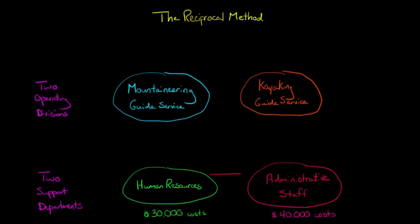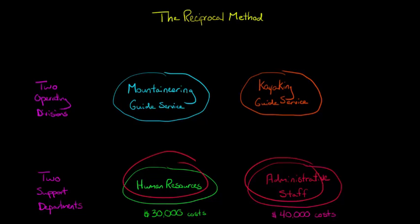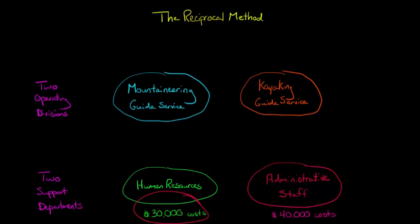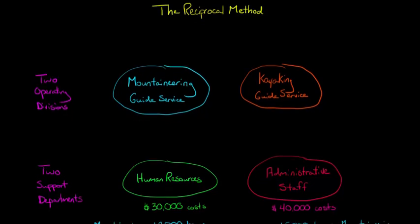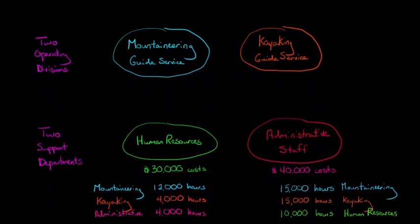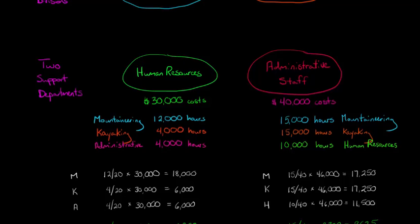We recognize that the HR department provides some support to the admin people, and the admin people provide some support to HR. So we need to allocate some costs between the support departments, not just to the operating divisions. The reciprocal method lets us allocate costs of admin to HR and costs of HR to admin, and then also allocate to our two operating divisions. We have $30,000 in costs for HR and $40,000 for the administrative staff department.